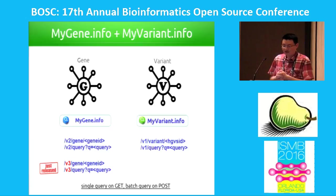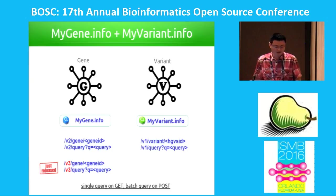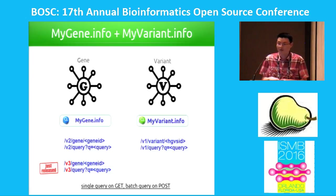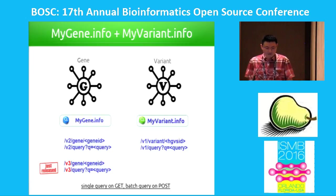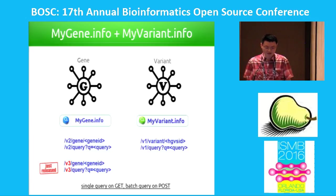We first developed mygene.info, meant to be a gene API. If you want to get annotation about a gene, you basically just need to go to this endpoint and know the gene ID — either an Ensembl gene ID or NCBI gene ID. You don't need to pick which database you want to use; knowing the gene ID is sufficient. You can also do queries for any gene matching a certain term. Just this morning, we announced the v3 API is already live with some improvements over v2. The v2 will still be there for a long time until everybody migrates to v3 — there are only a few backwards-incompatible changes.